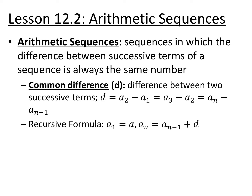An arithmetic sequence is a sequence in which the difference between successive terms is always the same number — you're adding the same thing every single time. We call that value the common difference, represented by the letter d. You can find the common difference by taking any two consecutive terms and subtracting them: the further term minus the smaller term — so a sub 2 minus a sub 1, a sub 3 minus a sub 2, or any a sub n minus a sub n minus 1.